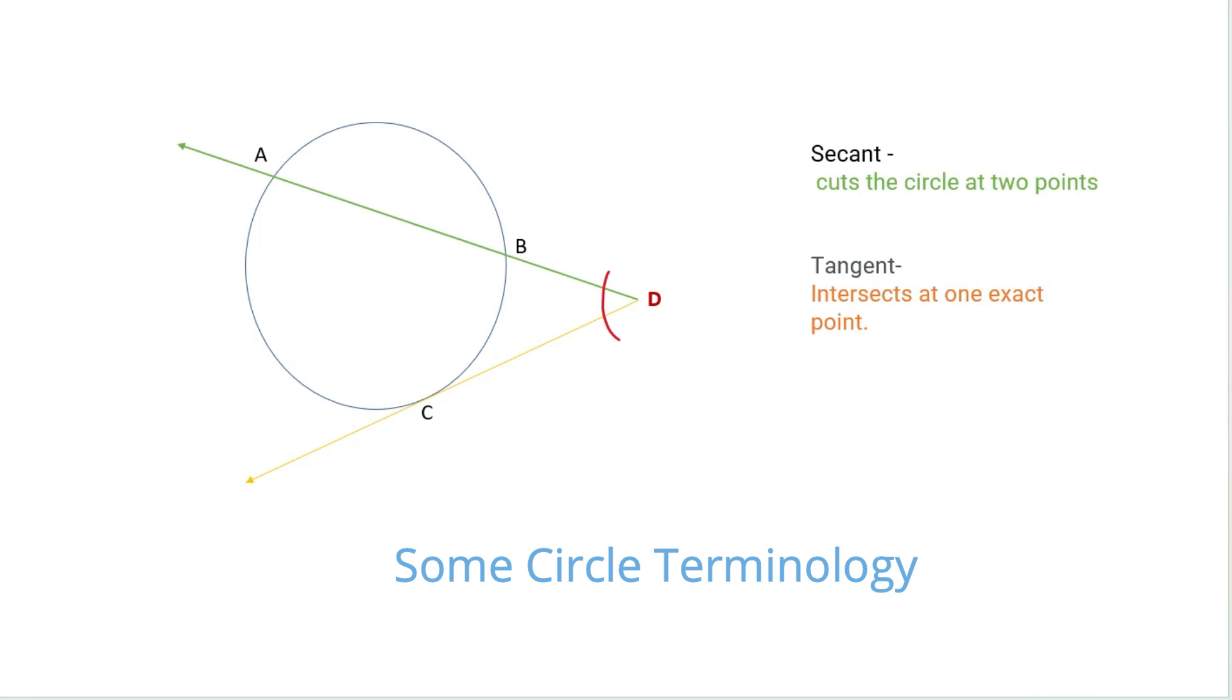The arcs here, you can see AC is the major arc because that's the bigger arc. BC would be considered the minor arc. And when you're talking about the outside angle, the measure of that angle is one-half the major arc minus the minor arc. So just some terminology to go over.